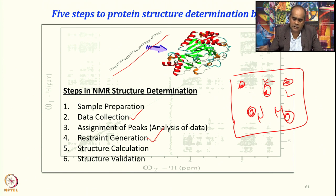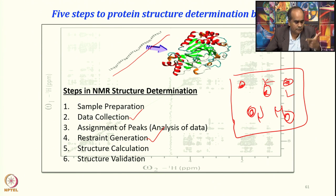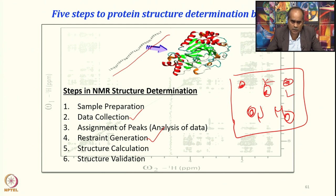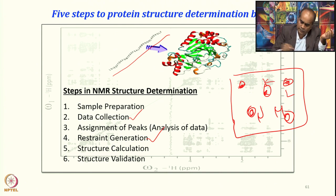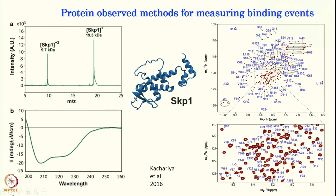Finally, we incorporate all these restraints for a structure calculation, determine the structure, and validate it — what is the quality of the structure. Once we have a structure, we are all set to understand how this protein is interacting with another protein or another ligand. We are now going to use the information captured during structure determination of the protein.